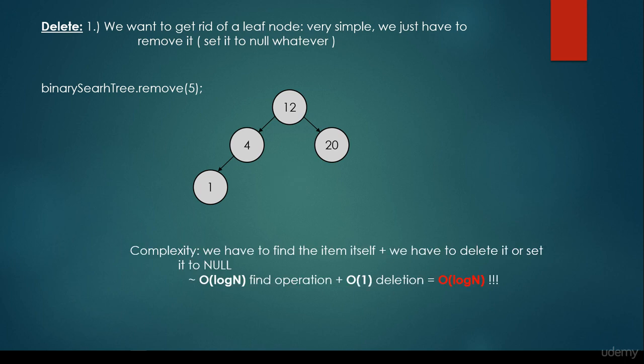The complexity is: we have to find the item itself, plus we have to delete it or set it to null. The overall complexity will be logarithmic, because first we have to find the item — it takes logarithmic time complexity — and then we have to remove it, which is O(1), constant time complexity. So the overall complexity will be logarithmic, O(log n).